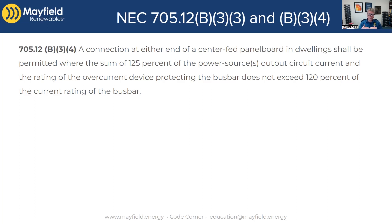What B34 is allowing us to do is make a load side connection on a center fed panel board. You pick one end or the other — the utility is coming into the center of the panel board, and you pick the top or the bottom. If you can meet the 120% rule that we talked about in B32, then you can do the load side connection. What we were seeing in the industry was people pulling out these center fed panel boards and doing panel upgrades when it wasn't really necessary. This code language caught up with what we were seeing out in the field in order to allow these load side connections.